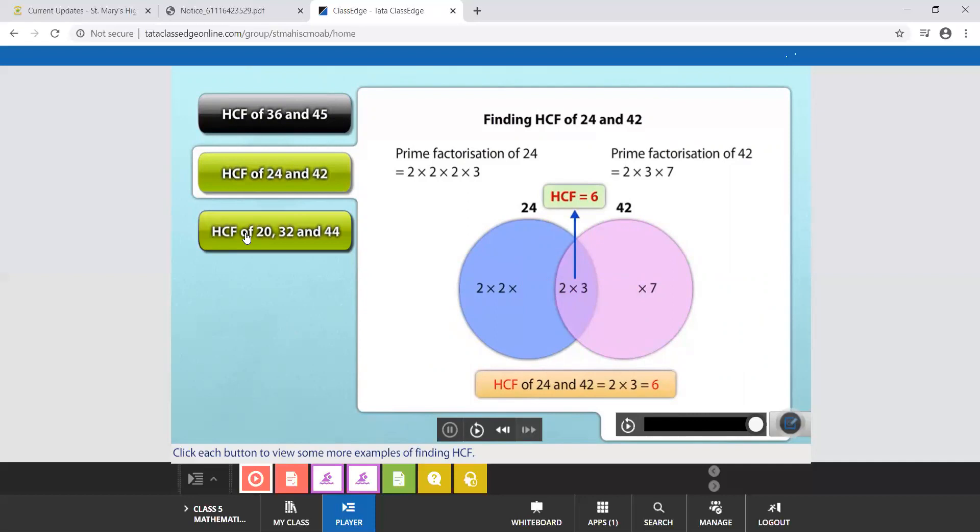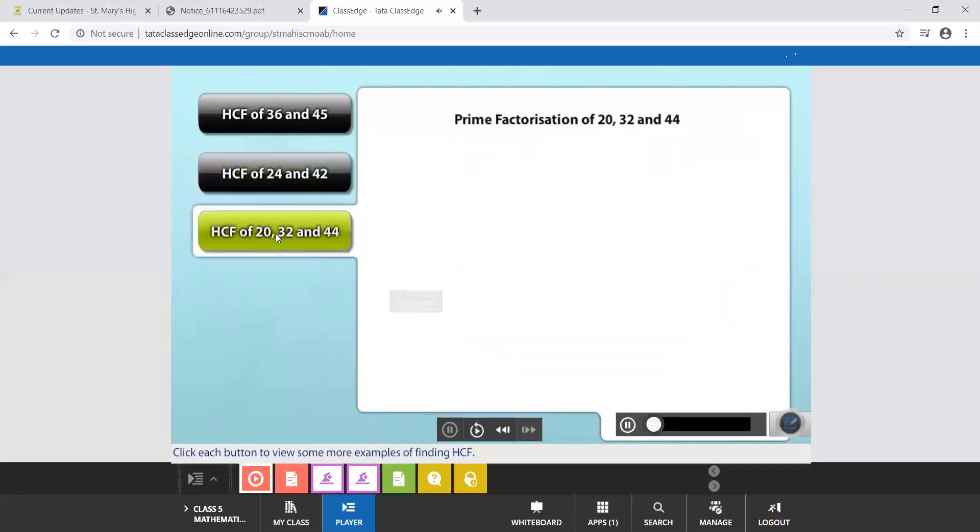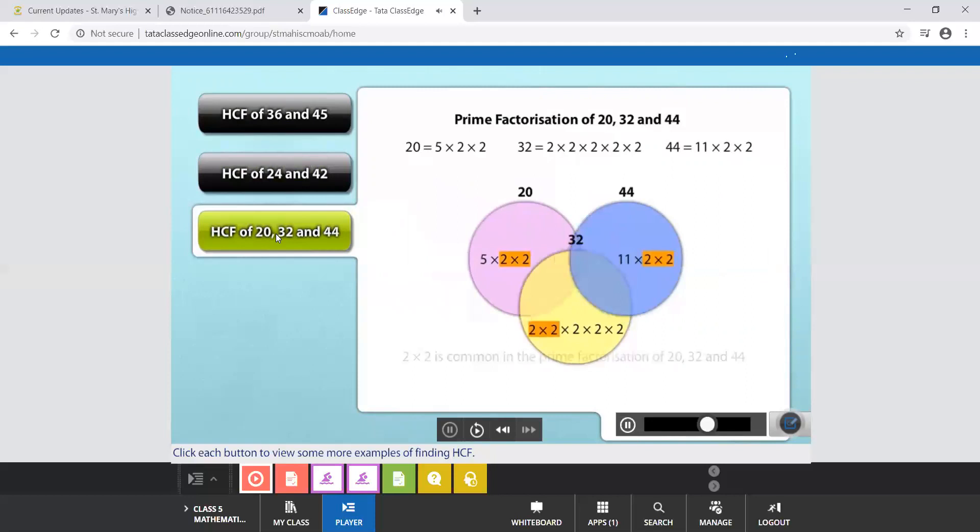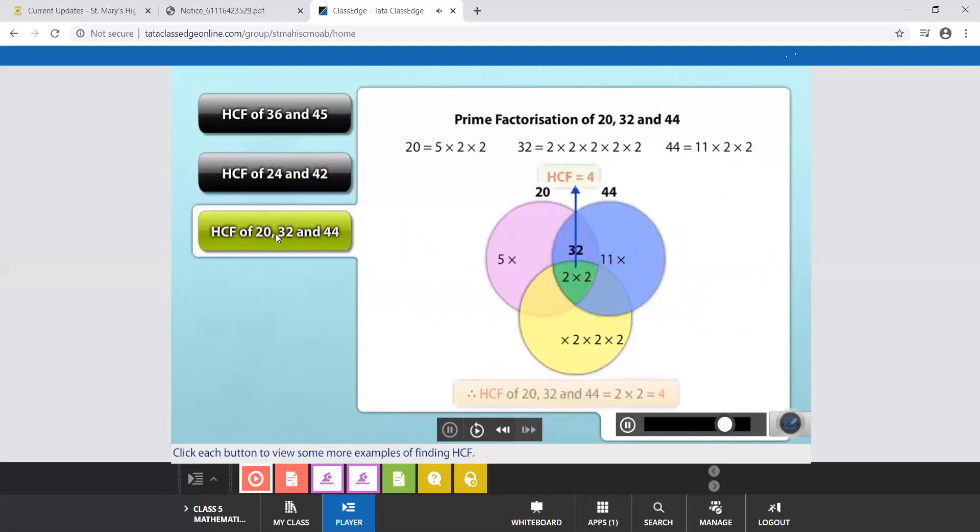Now, if there are 3 numbers, you find out for all the 3 and then see which is common to all the 3. Let's find the HCF for 3 numbers, 20, 32 and 44. In this case, you will notice that 2 into 2 is common to all 3 numbers. This means that 4 is the highest common factor of 20, 32 and 44.